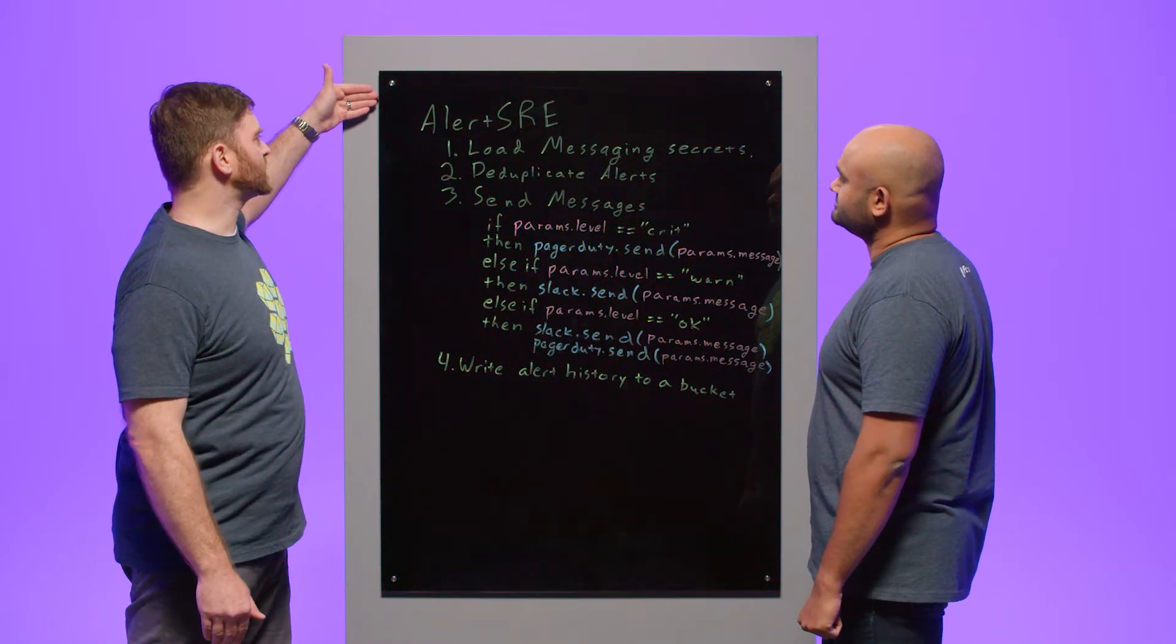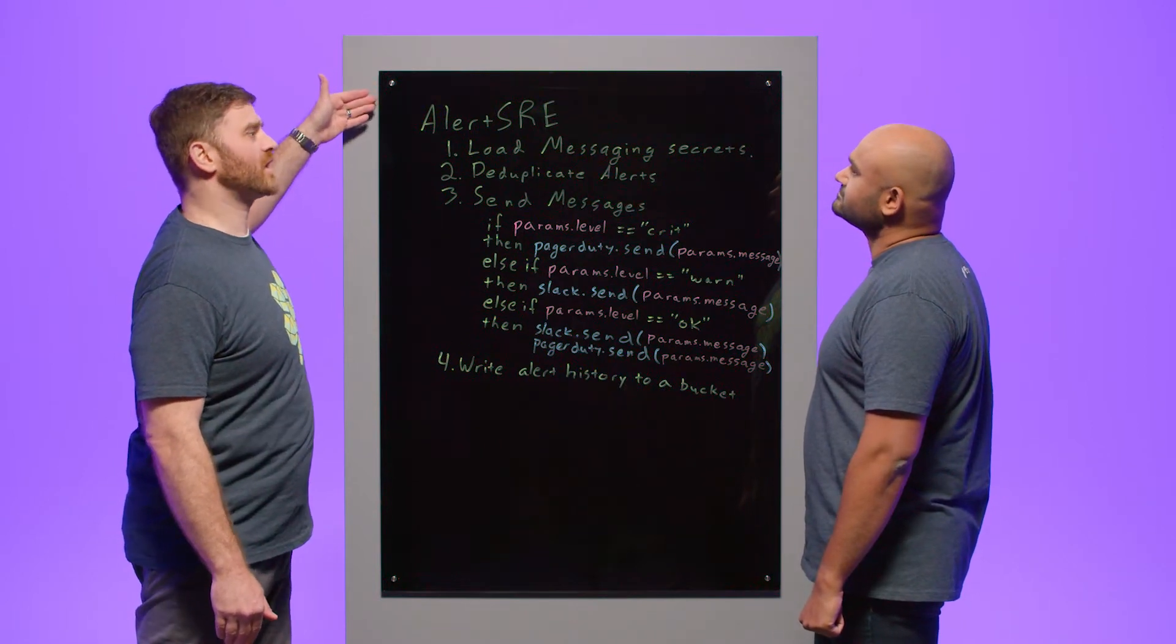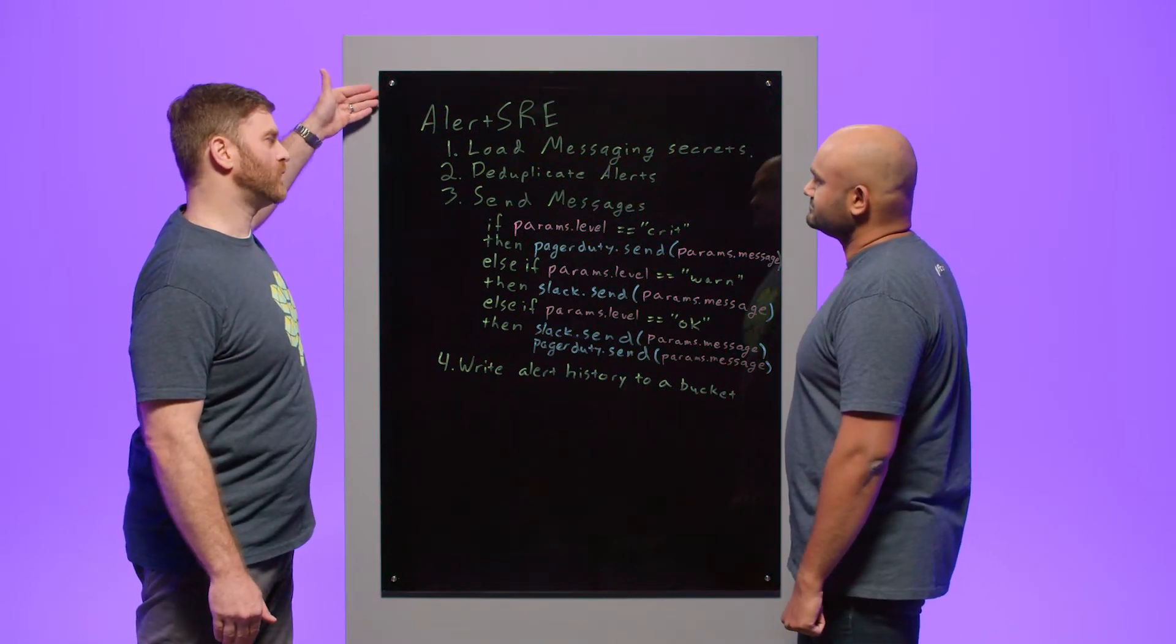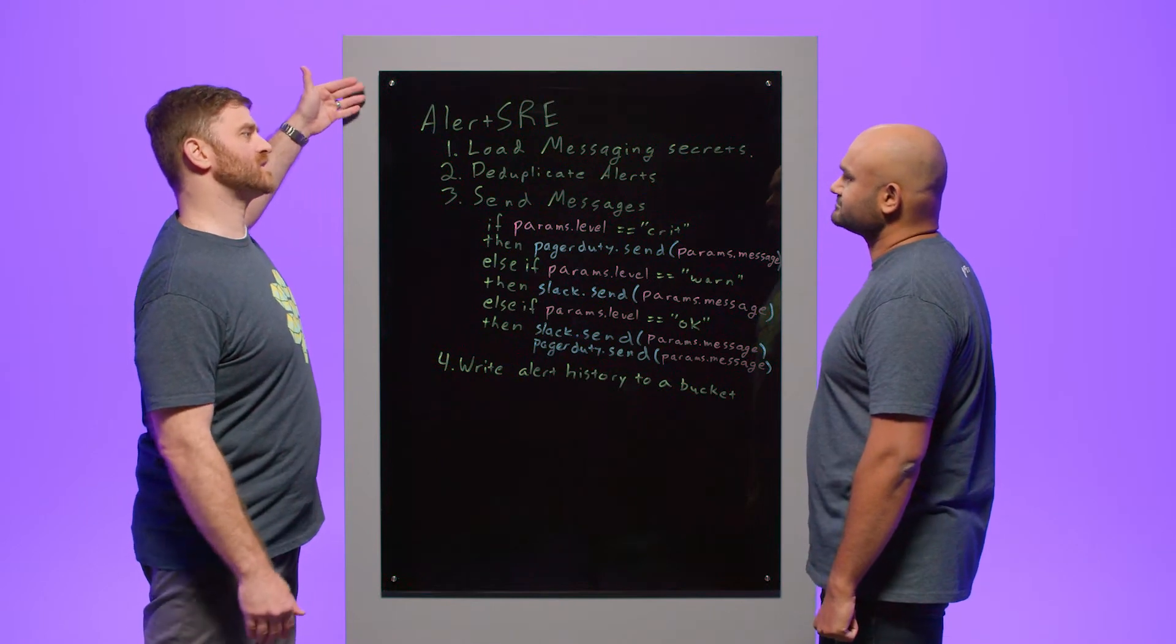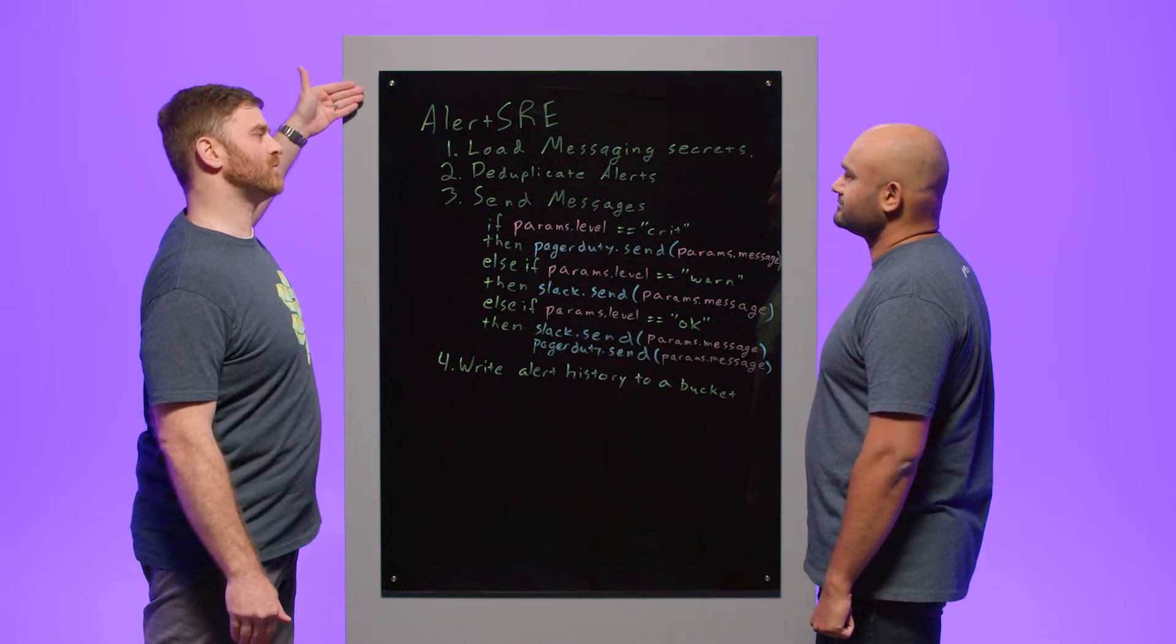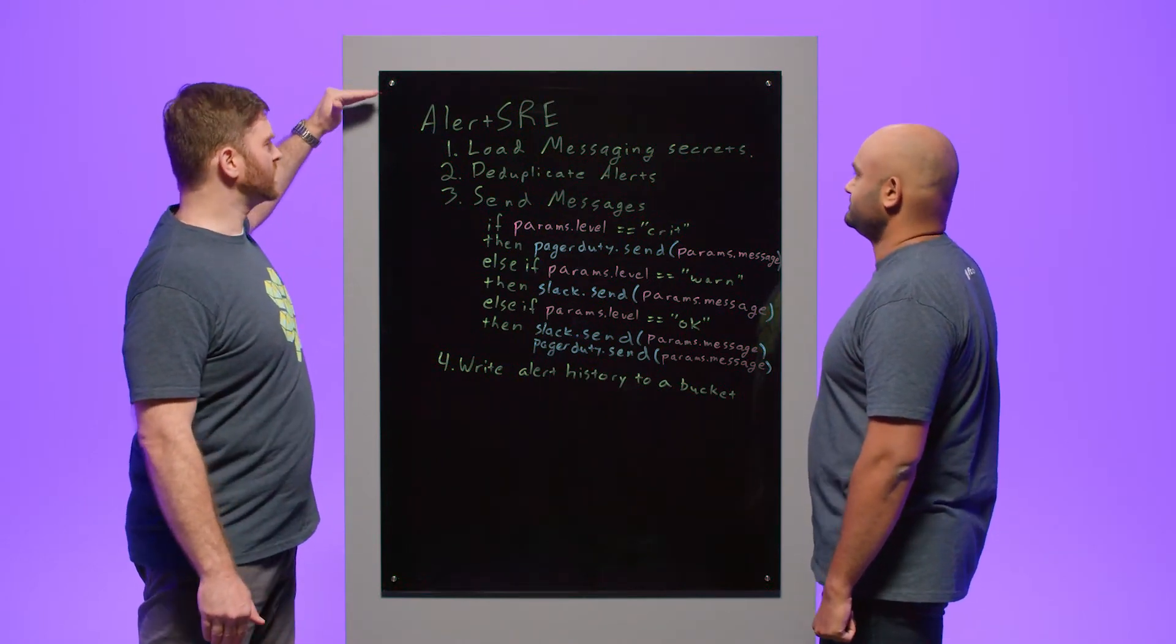So Adam, how can invokable scripts help me manage my alert policy? Great question, Vinay. What we can do with an invokable script is encode the policy for how we want to send messages based on different conditions that we detect from a different part of our platform. In this case, I have an example where we might want to alert our SRE team. And so under what policies, when do we want to alert them and what methods do we want to do?